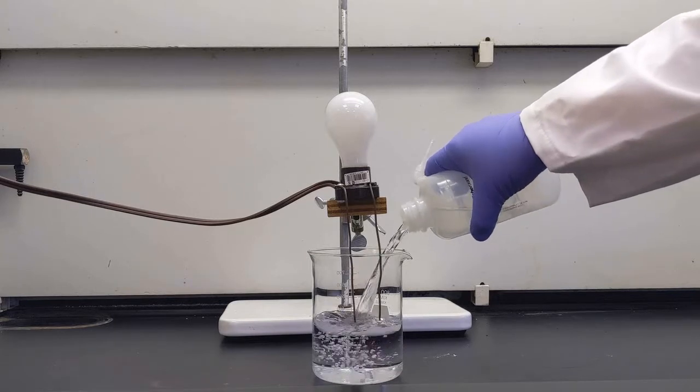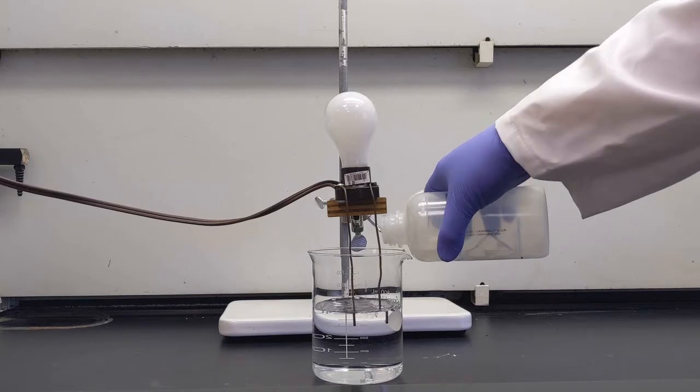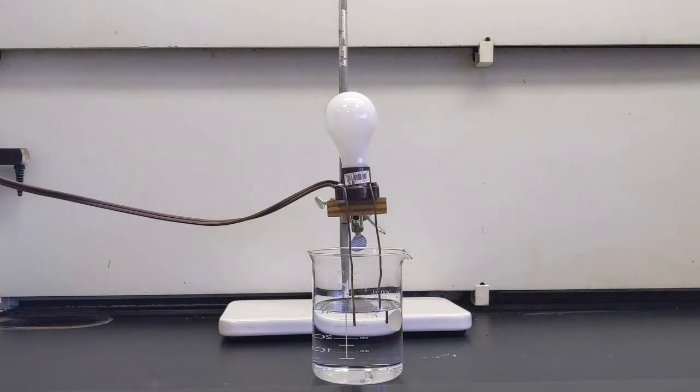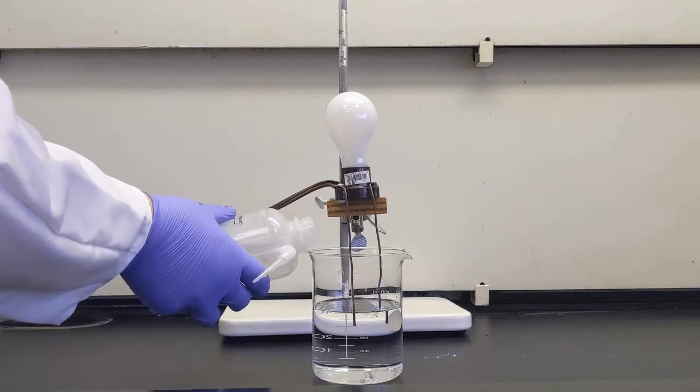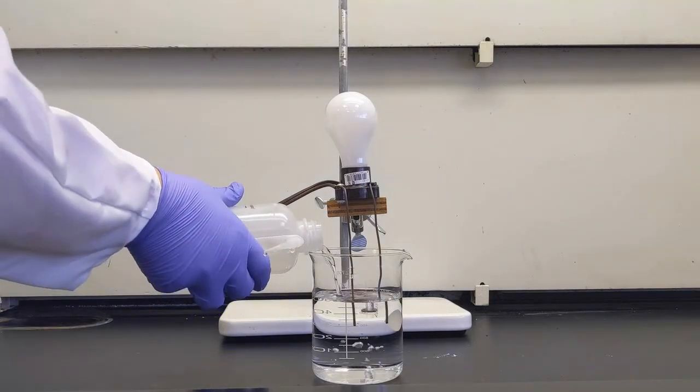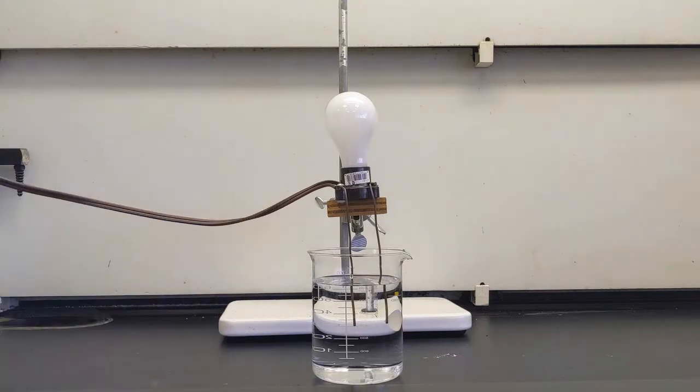The way that this test works is if our compound conducts, then the electricity should move between the two electrodes that you see submerged in the beaker right now. We'll top it off with just a little bit more water. If the electricity moves between those two electrodes, then the compound conducts when it's dissolved. And if the light bulb stays off, then no electricity moves between them.